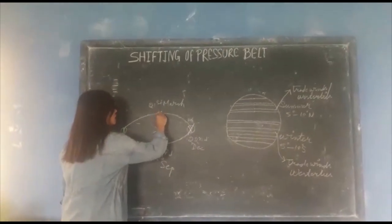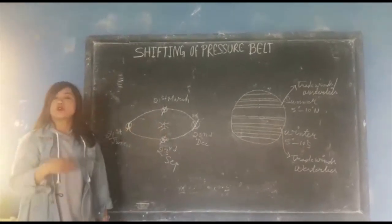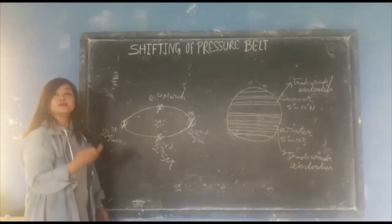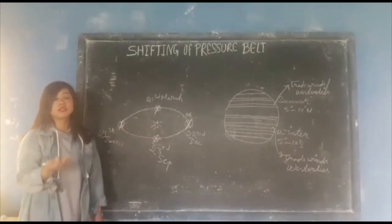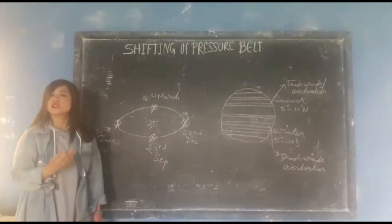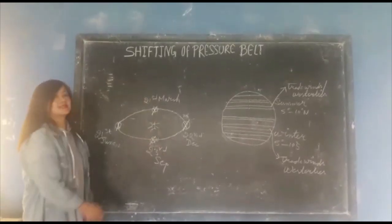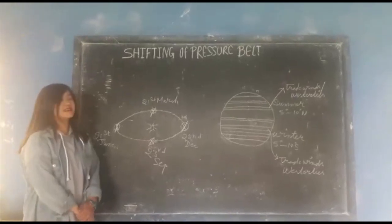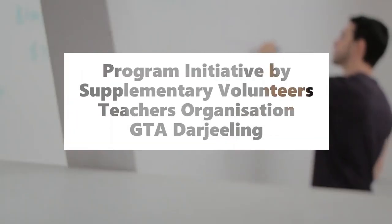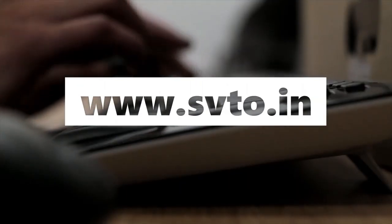During the Equinox — that is on 21st March and 23rd September — direct vertical rays of the sun fall on the Equator. During Equinox, the pressure balance will not shift or change its position. But during summer season and winter season, the pressure balance will shift. These are the key points about the shifting of pressure balance. Thank you.